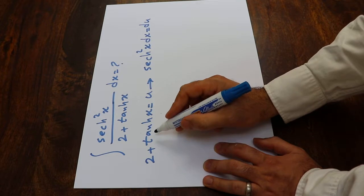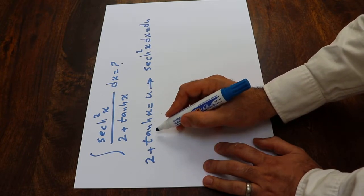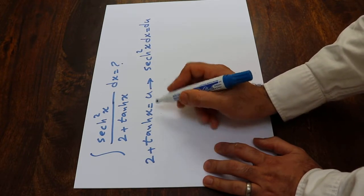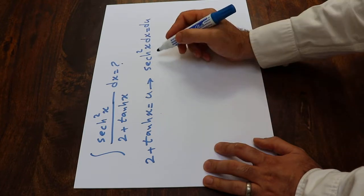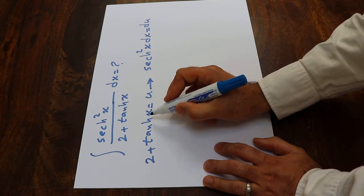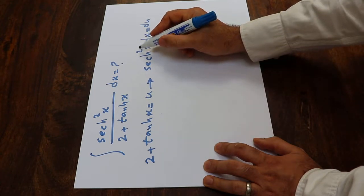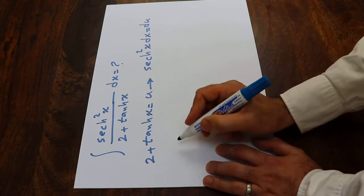If you are not sure how to calculate the derivative of hyperbolic tangent x, write in the comment section and we'll explain how to do that. In any case, the derivative of hyperbolic tangent x will be equal to sech squared x dx equal to du.